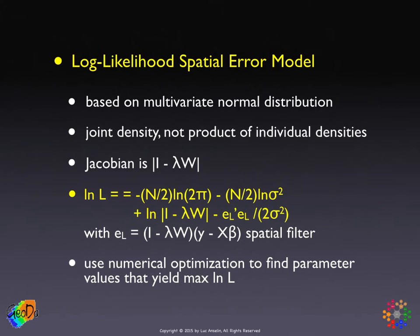Our point of departure is a multivariate normal distribution for the error terms — a joint density — and the Jacobian has the same form as for the spatial lag model: the determinant of I minus lambda W. The expression is very similar to the spatial lag model, except that the sum of squares of the error terms takes on a slightly different form, namely involving the spatially filtered variables y and x. We specify the joint log likelihood as a function of the parameters, and maximize it.